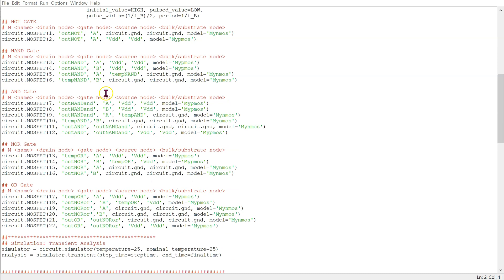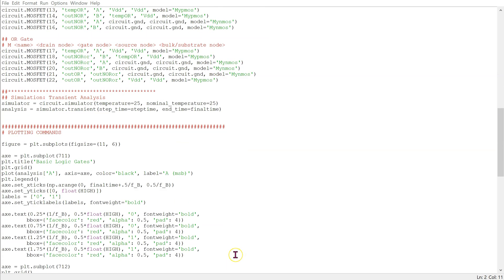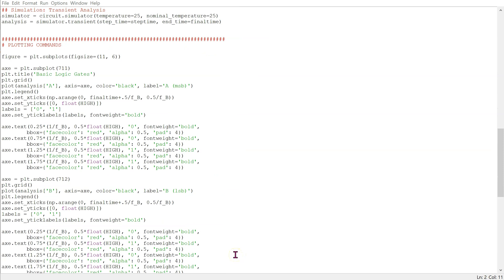We define the CMOS NOT, NAND, AND, NOR and OR gates. And we are running a transient simulation. Finally, we have the plotting commands.